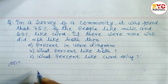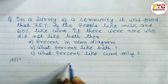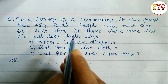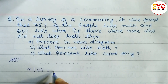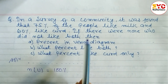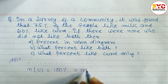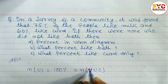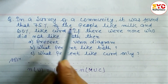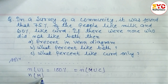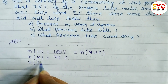Let M and C denote the set of people who like milk and curd respectively. Since the question is in percentage form, n(U) = 100%. Since no one dislikes both, M ∪ C = U, so n(M ∪ C) = 100%. From the given data: the percent of people who like milk, n(M) = 75%, and the percent who like curd, n(C) = 60%.